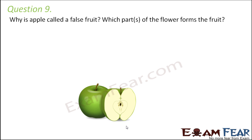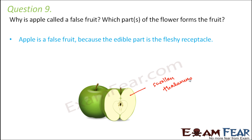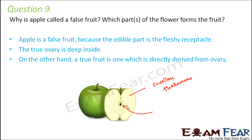Question number 9: Why is apple called a false fruit? Which part of the flower forms the fruit? It is the swollen thalamus that actually forms the edible part of the fruit. It is called a false fruit because the edible part is the fleshy receptacle, not directly derived from the ovary. The true ovule is deep inside. A true fruit is one which is directly derived from the ovary, so since apple does not match that definition, it is a false fruit.